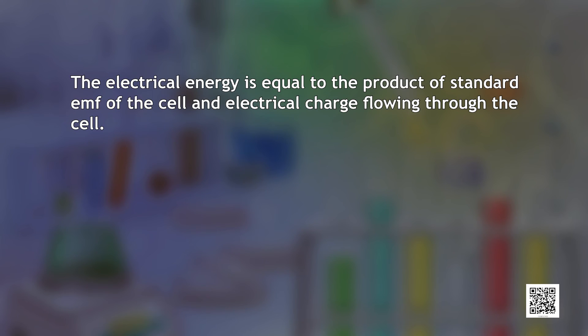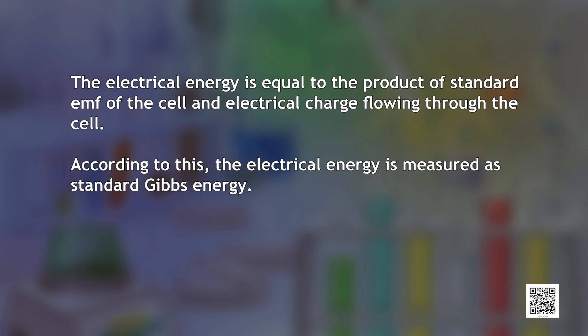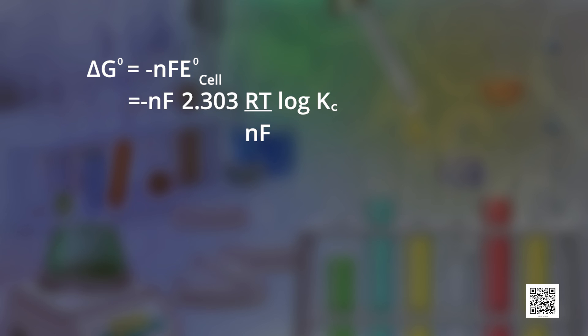An electrochemical cell is a source of electrical energy which can be employed for different kinds of work. The electrical energy is equal to the product of the standard EMF of the cell and the electric charge flowing through the cell. According to this, the electrical energy is measured as standard Gibbs energy, and so ΔG° = −NFE° cell. Substituting the expression for E° cell found above: ΔG° = −NF × (2.303RT/NF) log Kc, and so ΔG° = −2.303RT log Kc.